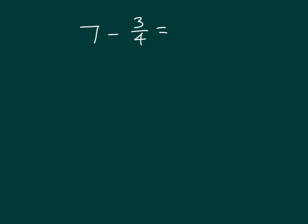Here we have 7 minus 3 fourths. We can decompose 7 and break apart 7 into the whole numbers 1 and what else? Right, 6. So 6 and 1 more gives us 7.